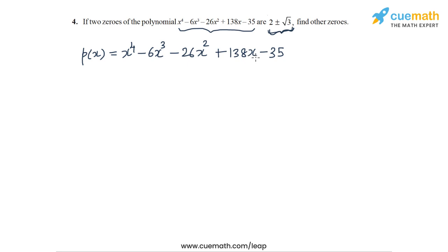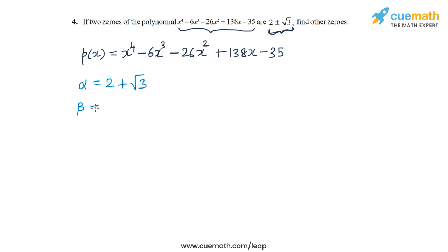Because two of the zeros are known, we can use these two zeros to write a quadratic factor of P(x). Let's call these two zeros as alpha and beta. So alpha is 2 plus root 3, and beta is 2 minus root 3.